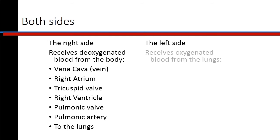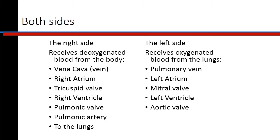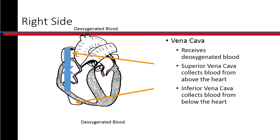The left side of the heart receives oxygenated blood from the lungs through the pulmonary vein. It will be emptied into the left atrium, progress through the mitral valve, and into the left ventricle. It then progresses through the aortic valve and into the aorta, making its way to the body to oxygenate the tissues. The superior vena cava collects blood from above the heart and the inferior vena cava collects blood from below the heart.